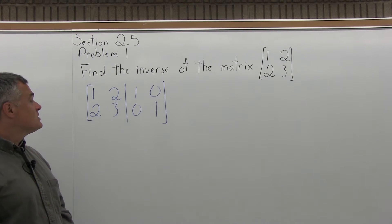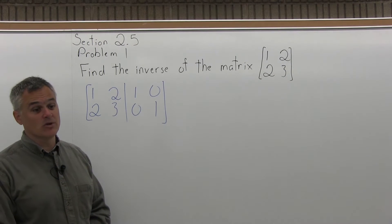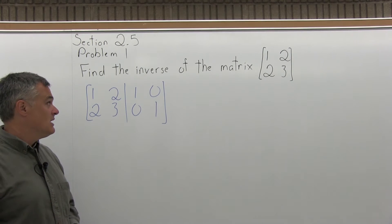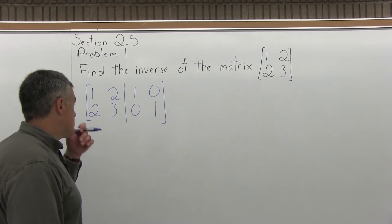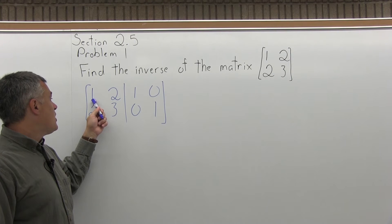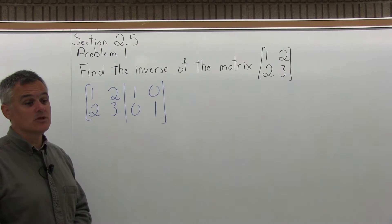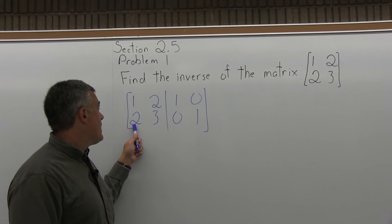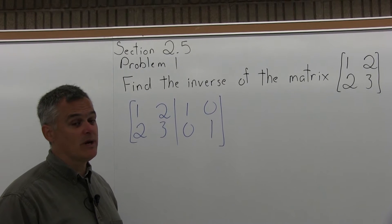To find the inverse, we're going to write the matrix that we have to find the inverse of, and right next to it, we're going to write an identity matrix of the same size. What we're going to wind up with is a big double-wide matrix. The top row of this double-wide matrix is 1, 2, 1, 0, and the second row is 2, 3, 0, 1. Now, what we have to do is whatever steps are required to make the matrix on the left look like an identity — applying those steps to the entire double-width matrix — and the matrix on the right will turn into the inverse. To solve the matrix on the left, the position in the upper leftmost spot has to become a 1. Just by coincidence, it already is a 1, so that's good.